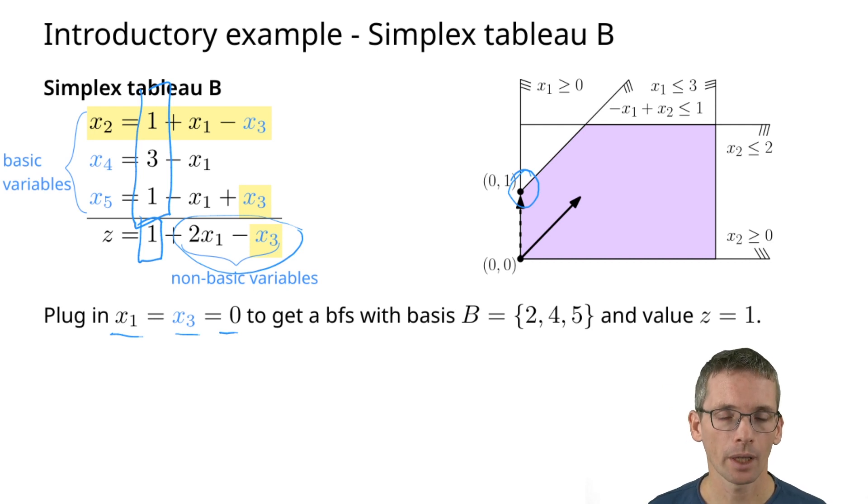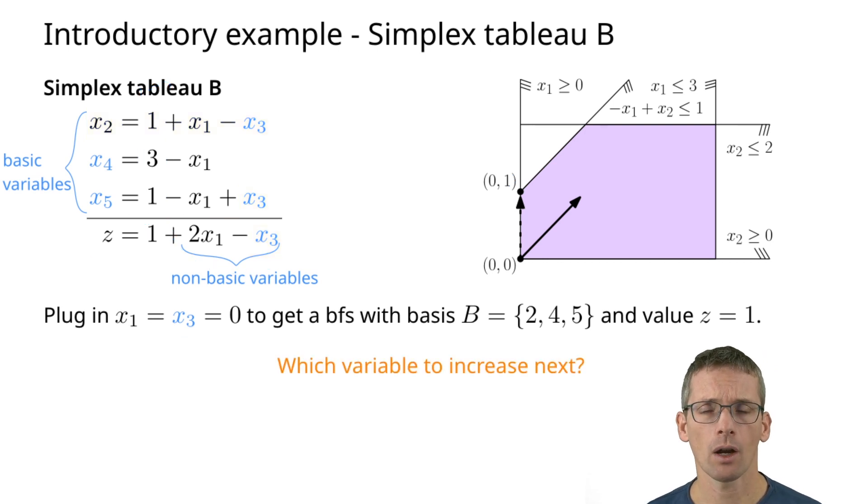Of course, I want to increase my objective value further. So the question is, how do we do that? Which variable do we want to increase next? For that, just look at this equation here. How can we increase z by increasing one of those that are currently 0 to something larger? It has to be one with a positive sign, so it has to be x1. Now we're going to take x1 and make x1 a basic variable.